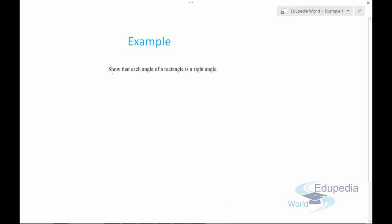Example number one: show that each angle of a rectangle is a right angle. We need to prove that each and every angle of a rectangle is a right angle. First of all, let's draw the diagram — here we have a rectangle ABCD.